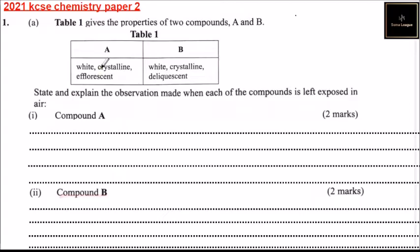Compound A is described as white, crystalline, and efflorescent. Compound B is described as white, crystalline, and deliquescent.